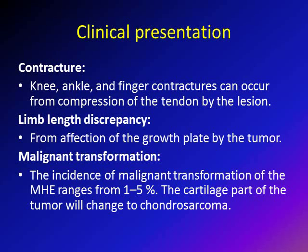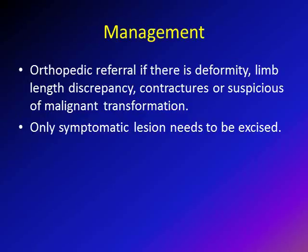Other clinical presentations of multiple hereditary exostosis include joint contracture — commonly at the knee, ankle, or fingers — because osteochondromas can compress tendons. It can also cause limb length discrepancy if osteochondromas affect the growth plate, shortening the bone. Malignant transformation occurs in about 1–5% of MHE cases, developing in the cartilaginous part and transforming into chondrosarcoma.